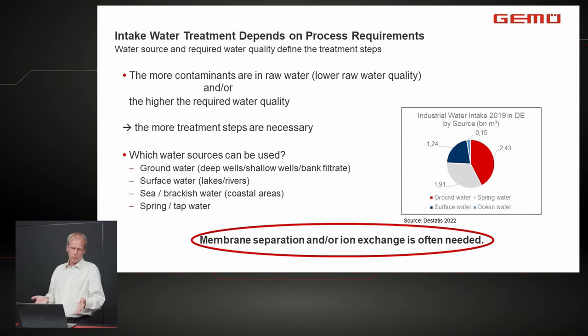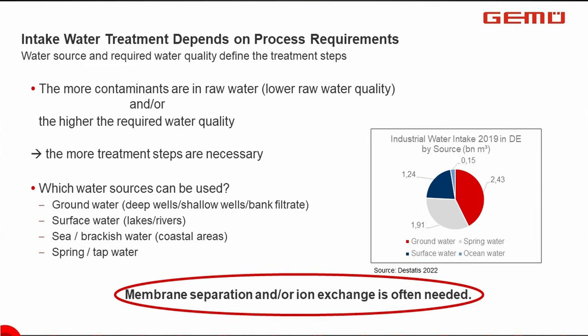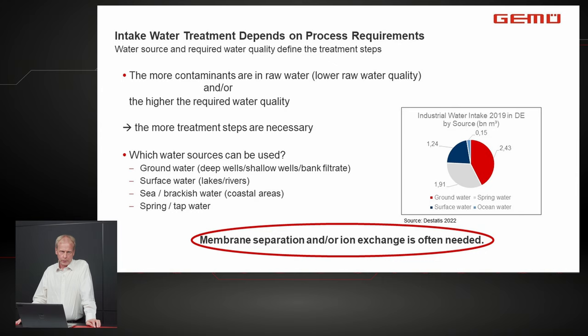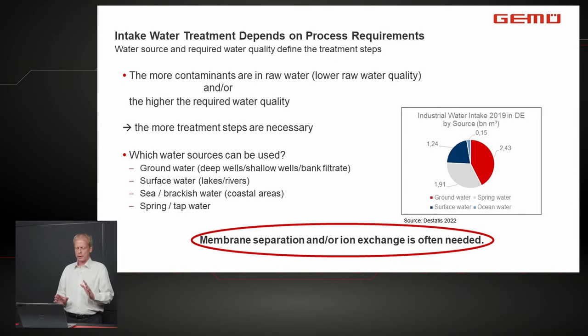Typical water sources include groundwater, surface water, sea or brackish water in coastal areas, and spring or tap water. In German industry, groundwater and spring water are preferred because they require less treatment and are easier to bring to the required quality. Nevertheless, membrane separation and ion exchange are still needed for this treatment.